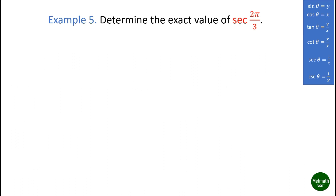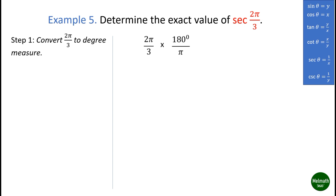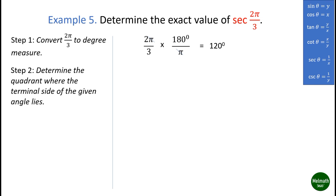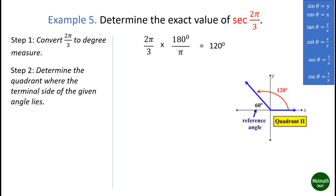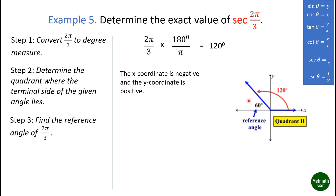Example five: determine the exact value of secant(2π/3). Convert 2π/3 to degree measure: 2π/3 × (180°/π) = 120 degrees. Determine the quadrant where the terminal side lies. Observe that 120 degrees, or 2π/3, is located in quadrant two; therefore the x-coordinate is negative and the y-coordinate is positive. Find the reference angle of 2π/3: 180° - 120° = 60°, or pi over three.